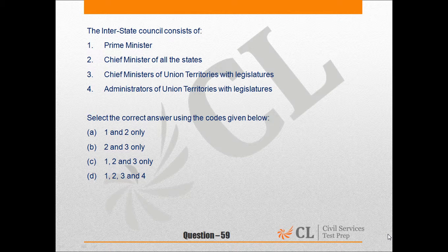Question number 59, from the polity section. The question is: the Interstate Council consists of — one, Prime Minister; two, Chief Ministers of all the states; three, Chief Ministers of union territories with legislature; four, administrators of union territories with legislatures. The Interstate Council is a recommendatory body with duties to investigate and discuss subjects of common interest between the union and states, or among the states.